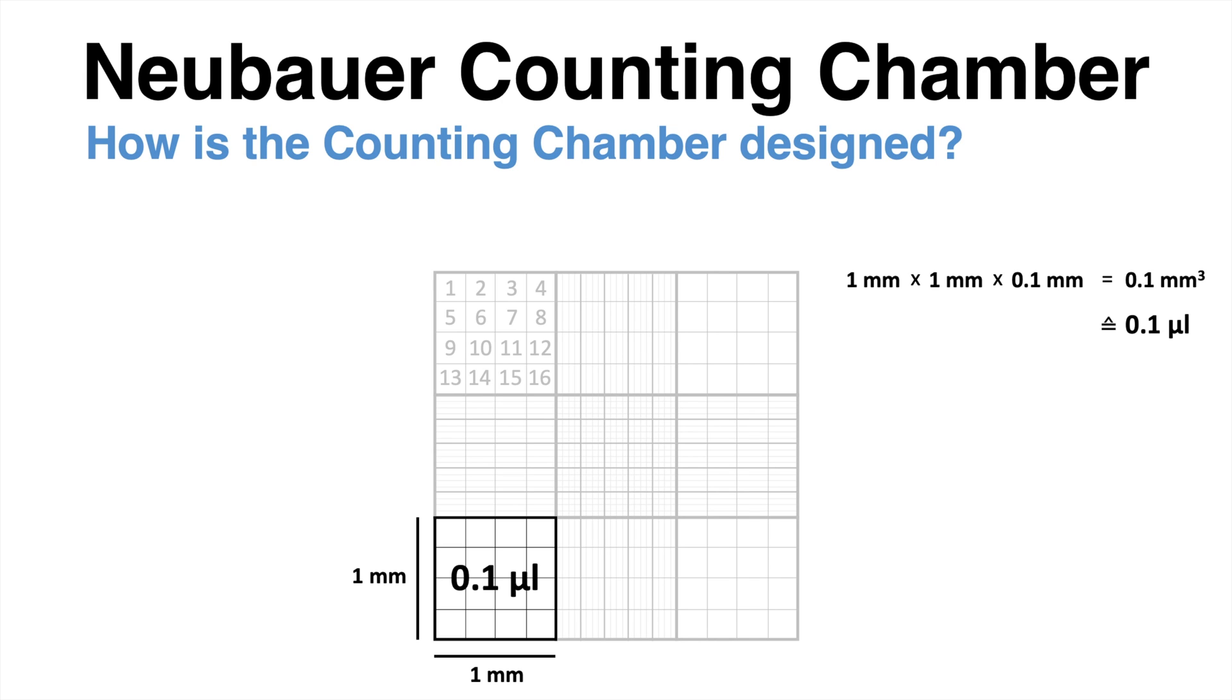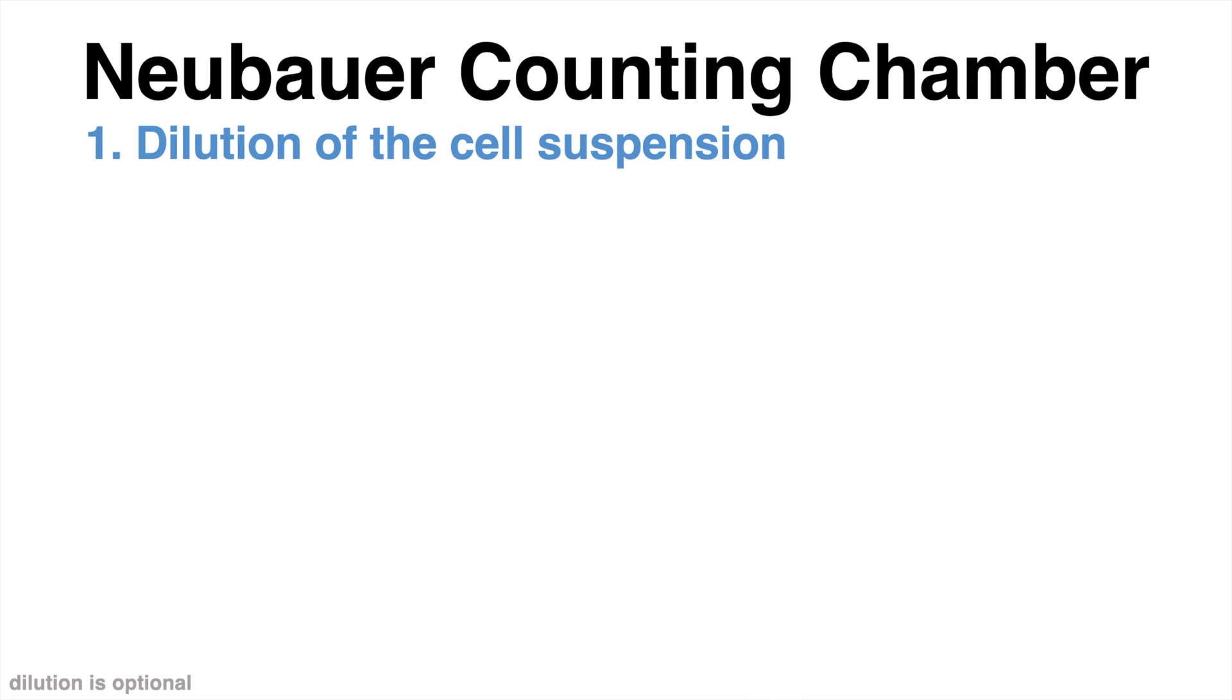Here is one example to showcase how the Neubauer counting chamber is used for cell counting by hand. To determine how many cells per milliliter grow inside the cell culture flask, the cells are first detached from the cell culture flask.